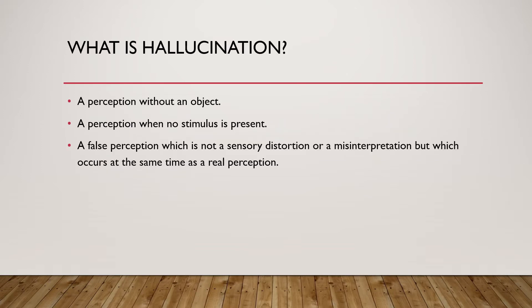What is hallucination? Hallucination is a perception without an object. That means there is no stimulus present and the person either sees things that are not there, hears things that are not there, or even feels on the body with the skin when things are not there. It is a false perception which is not a sensory distortion or a misinterpretation but which occurs at the same time as a real perception.